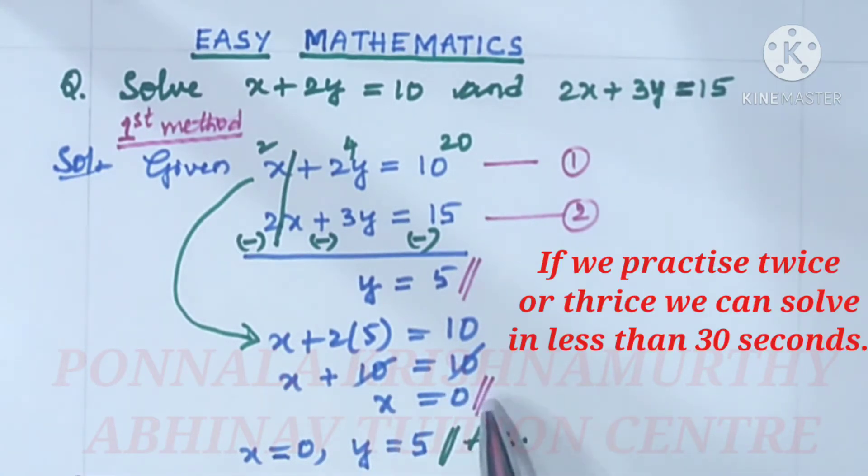Then x is equal to 0. y is equal to 5. Here x is equal to 0, y equal to 5. Answers.